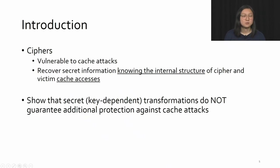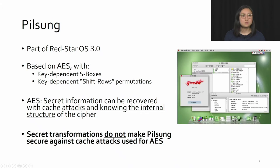Ciphers can be vulnerable against cache attacks. We recover secret information if we know the internal structure of the cipher and if we know the victim's cache access. In the paper, we show that secret key-dependent transformations do not guarantee additional protection against cache attacks. We will be looking at the encryption algorithm PoSung, which is part of the North Korean Red Star OS 3.0. It was leaked a few years ago, and CryptosLogic has reverse-engineered its code. It's what we've used to test our attack on.